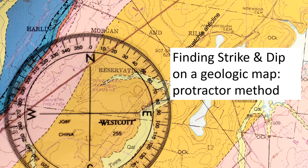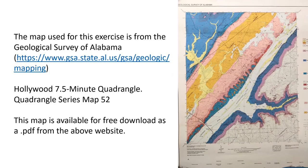Finding Strike-and-Dip on a Geologic Map Using a Protractor. The map being used for this exercise is from the Geological Survey of Alabama. It is the Hollywood 7.5 Minute Quadrangle, Quadrangle Series Map 52. This map, and others like it, are available for free download as a PDF from the above website.